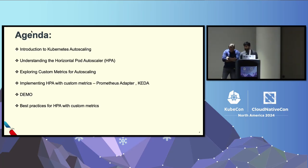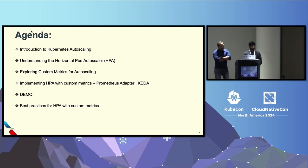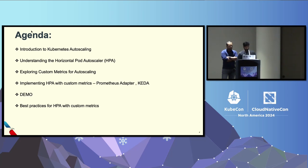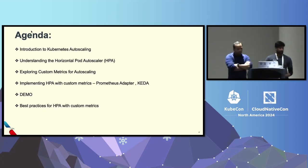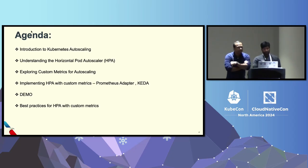We'll briefly cover what autoscaling is and the different types of autoscaling, but we will focus on the horizontal pod autoscaler. We'll explore custom metrics — what they mean and how they can be used to scale HPA. We'll look into two tools: Prometheus Adapter and KEDA. We'll have live demos, discuss best practices with custom metrics, and then go into Q&A.